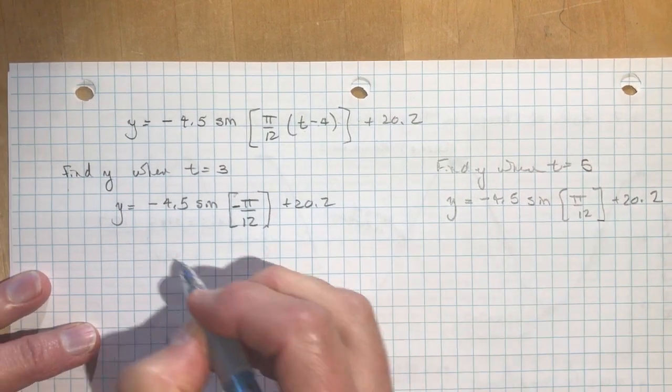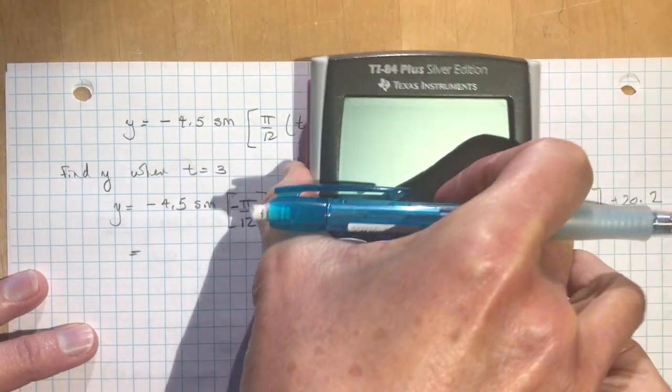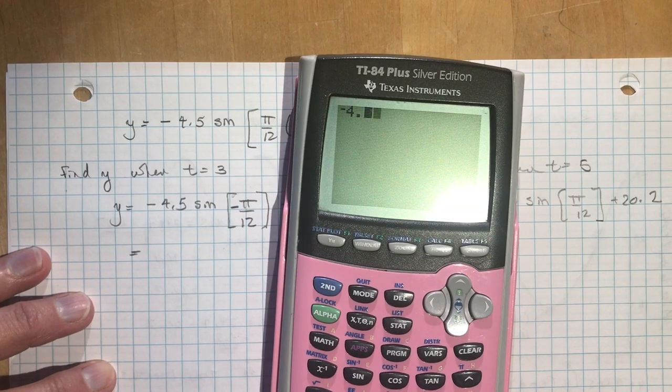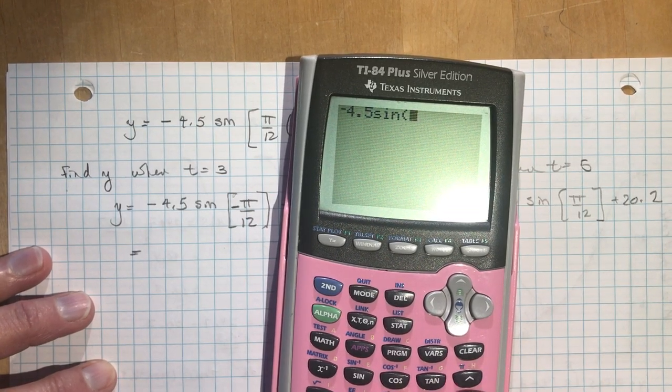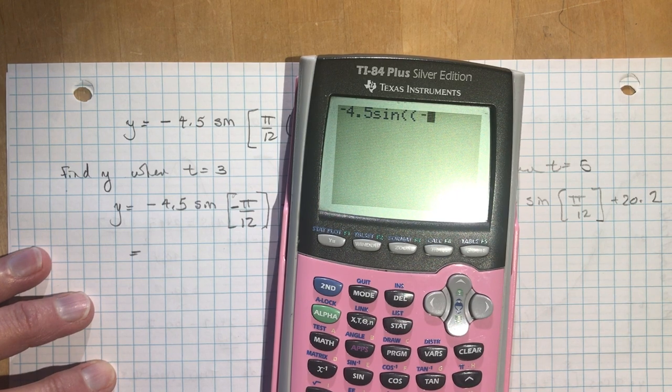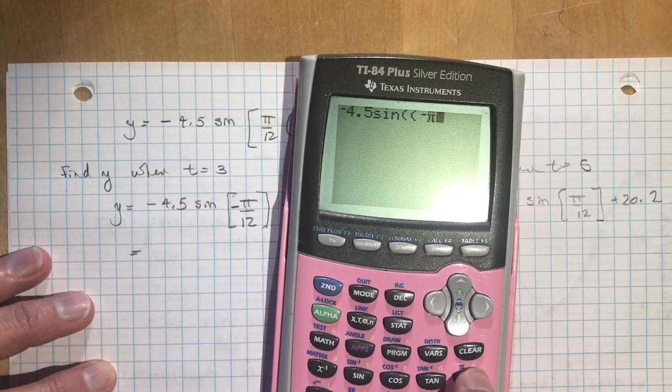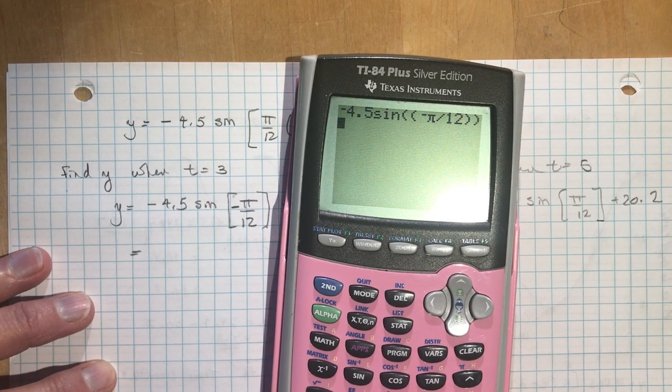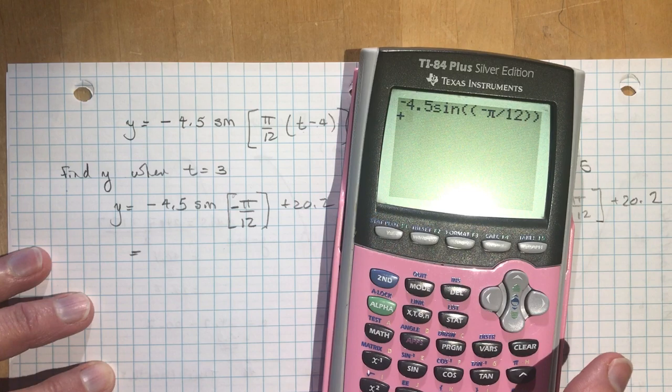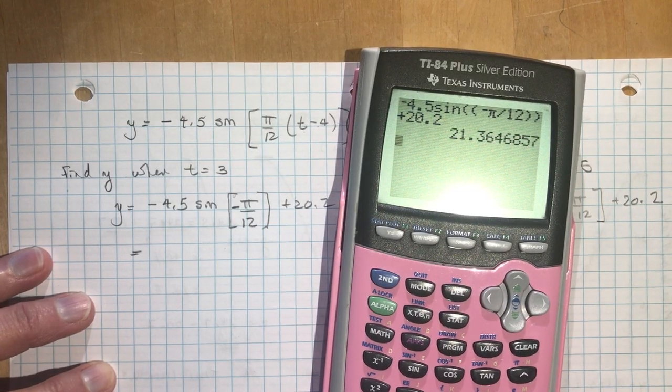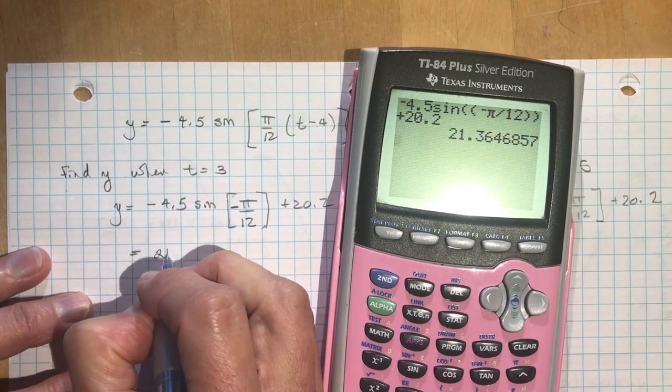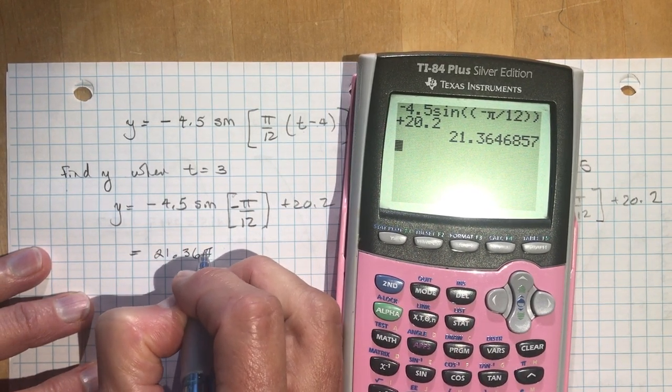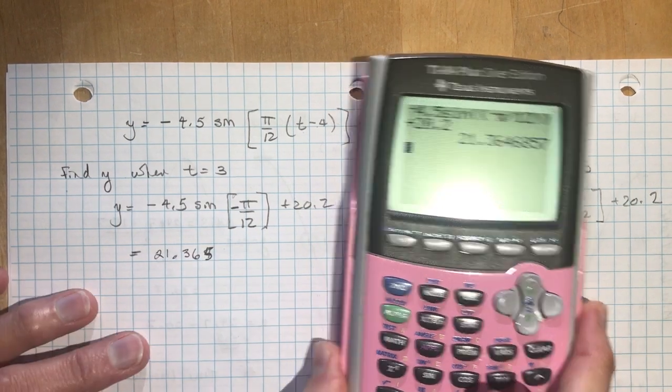And you would get out your trusty calculator here, so I'm going to do negative 4.5 sine bracket negative, don't forget the negative is down here, right, π divided by 12, they always give you two sets of brackets here, so just make sure you put it in, or it's going to say, give me a mistake, so I get 21.364, wow, let's do 365, that's three decimal places, which is nice.